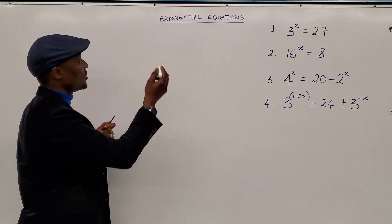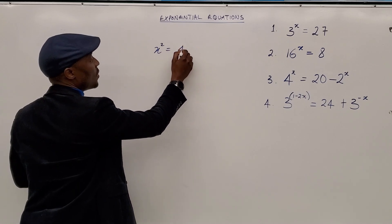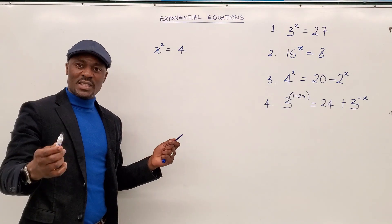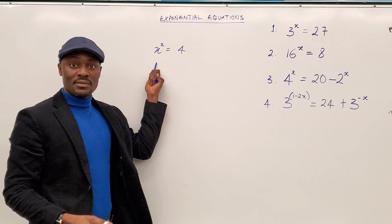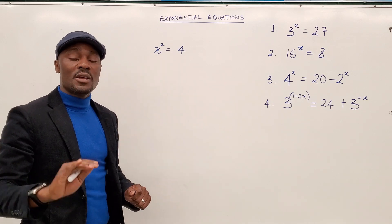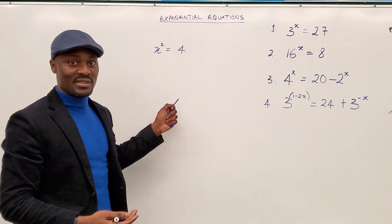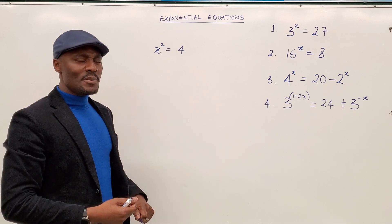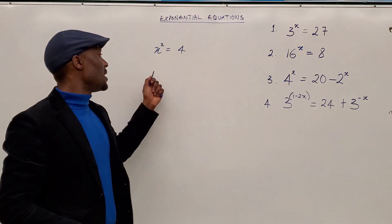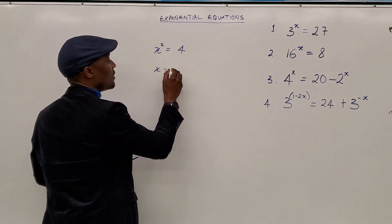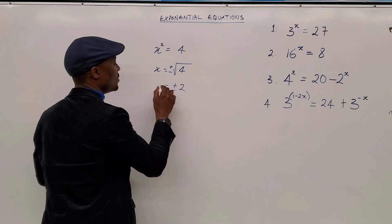So if you get a question like x squared equals 4 and they want you to find x, it's easy for you to take the square roots of both sides because what you don't know is the base — you know the exponent. When you know the base but you don't know the exponent, you can apply any kind of rule you want. Take the square root of both sides and you'll end up with x equal to plus or minus 2.